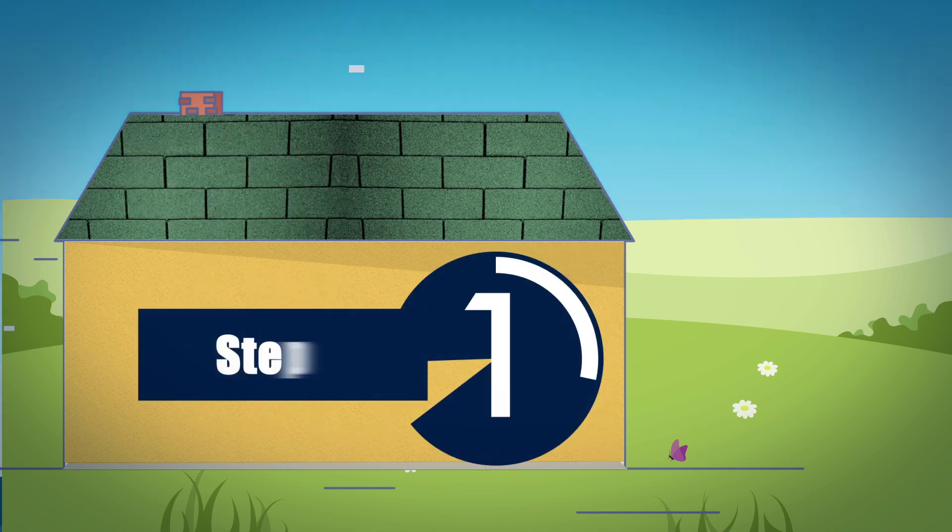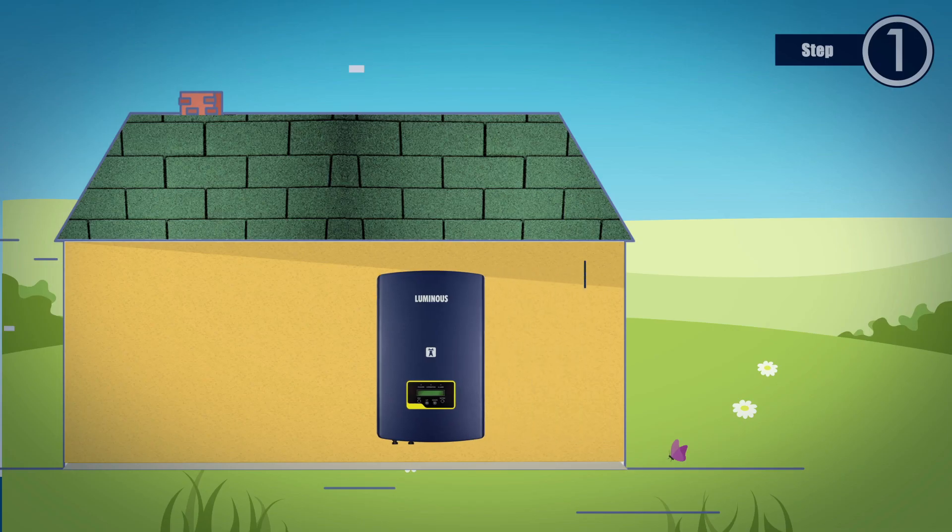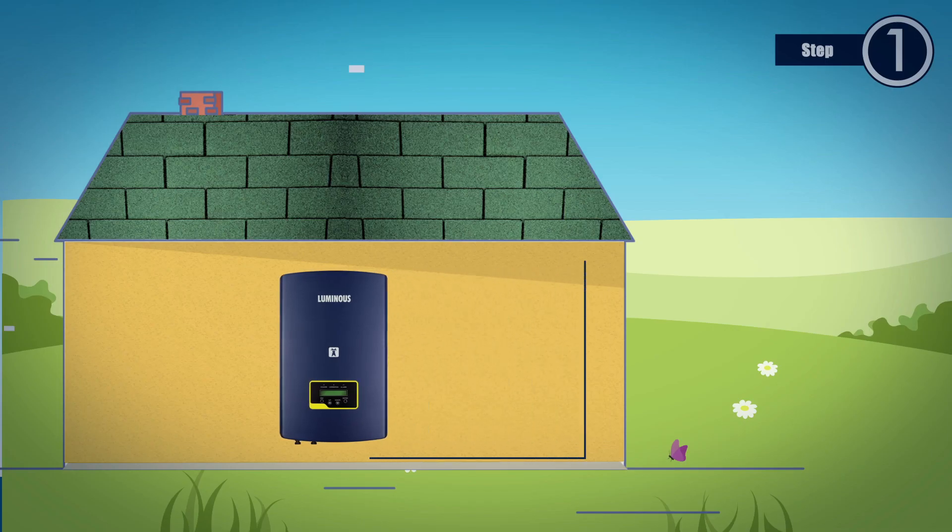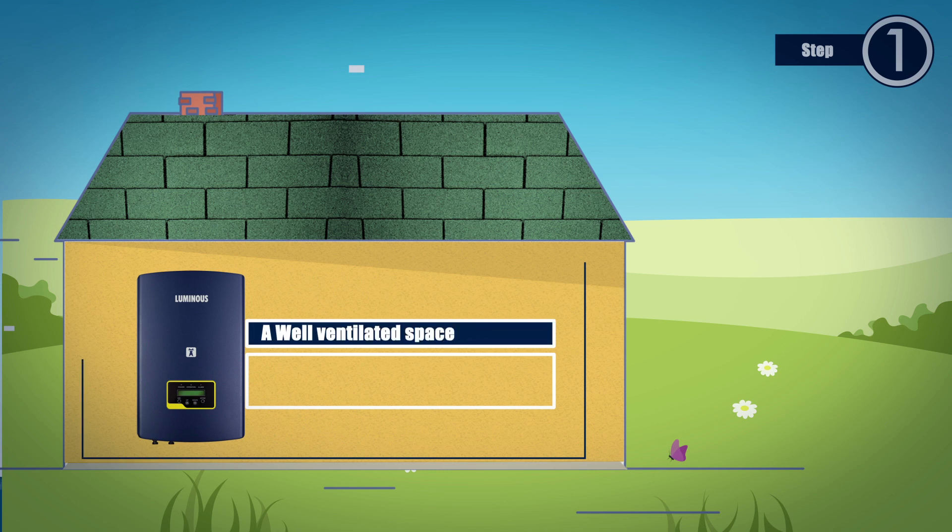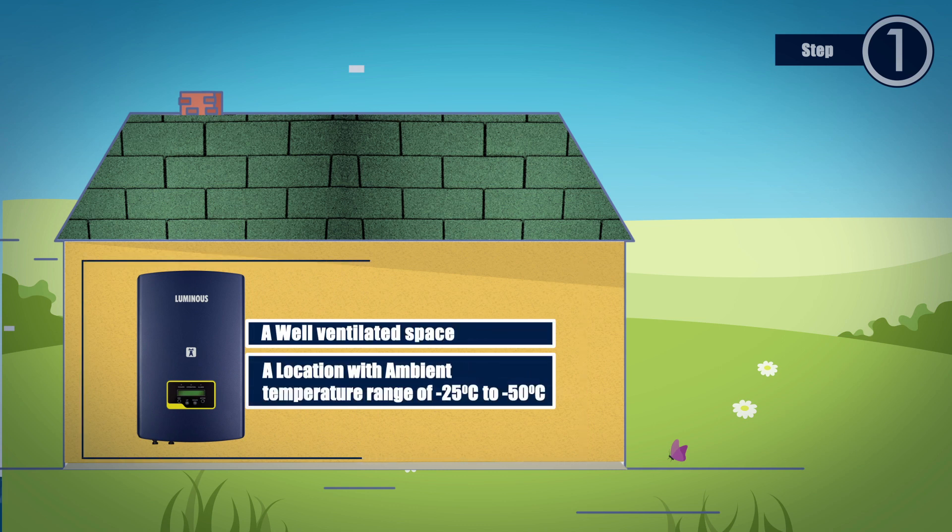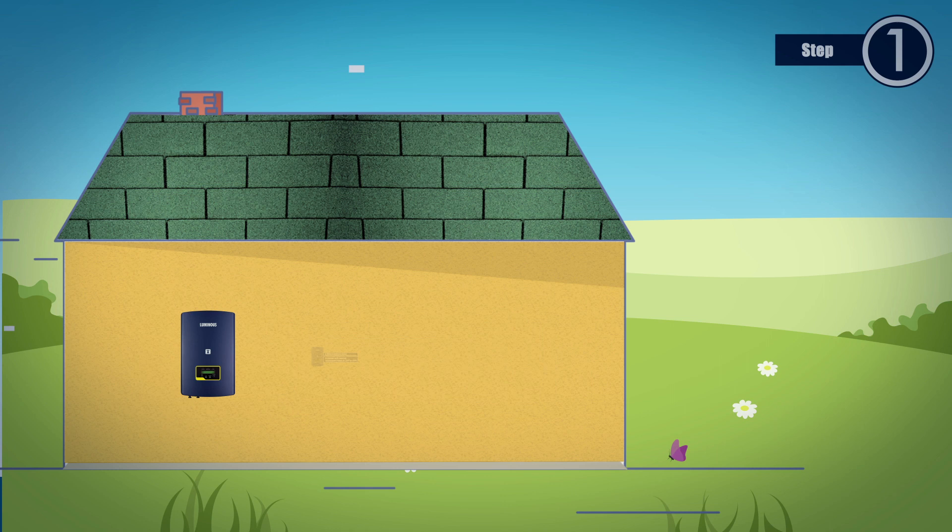Step 1. Select the right location for the inverter installation. The inverter should be installed in a well-ventilated area where the ambient temperature is in the range of minus 25 degrees centigrade to 50 degrees centigrade.